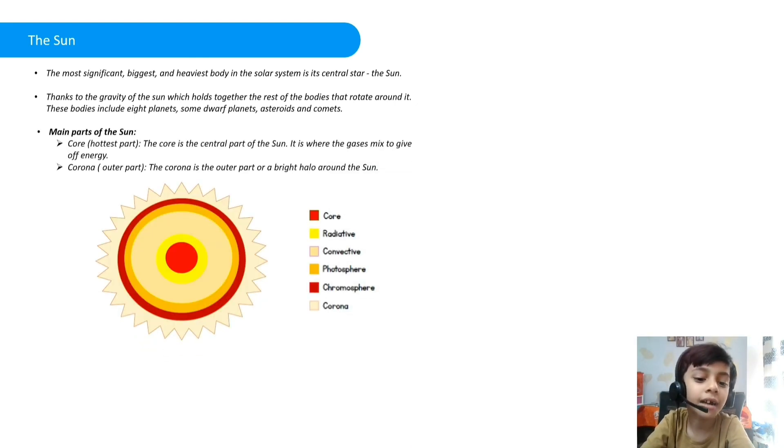There are many parts of the sun. The main parts of the sun are core, the hottest part. The core is the central part of the sun. It is where the gases mix to give off energy. Corona, the outer part. The corona is the outer part or a bright halo around the sun.